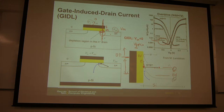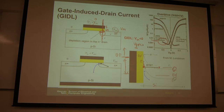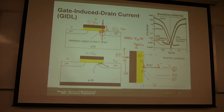That means electrons in the valence band will have higher energy than the conduction band. So this electron may tunnel through the silicon band gap from the valence band to the conduction band — this is called band-to-band tunneling, BTBT. If this electron tunnels through, you will create a hole in the valence band and an electron in the conduction band, generating an electron-hole pair, which means current.